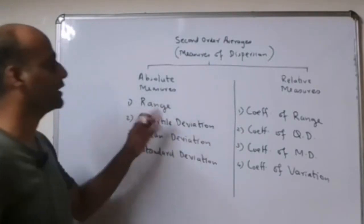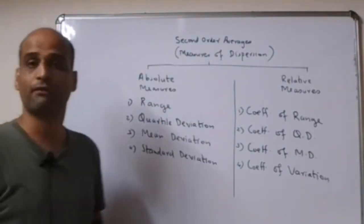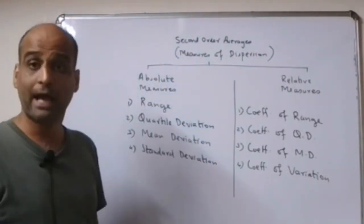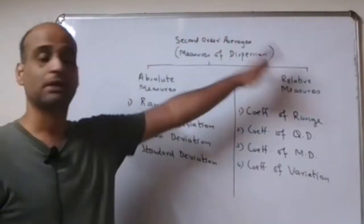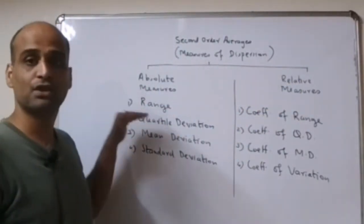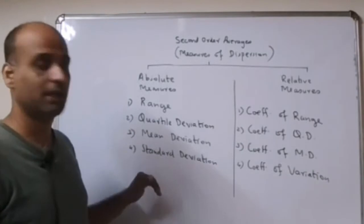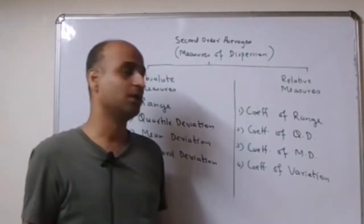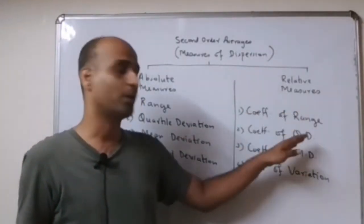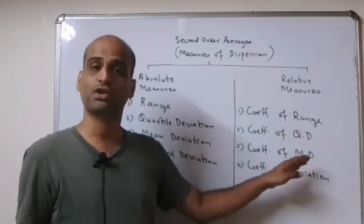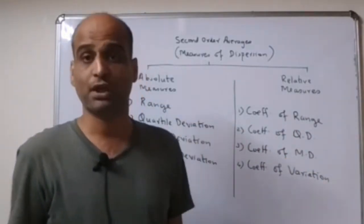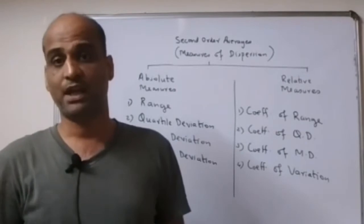So these are the measures of dispersion, that is the second order averages — absolute and relative. In absolute measures you have range, QD, MD, and SD. In relative measures you have coefficient of range, coefficient of QD, coefficient of MD, and the last is coefficient of variation.